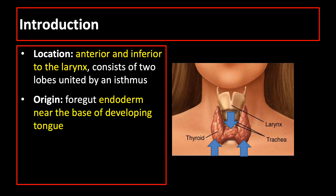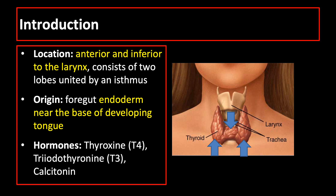It originates in early embryonic life from the foregut endoderm near the base of the developing tongue. The thyroid gland synthesizes the hormones thyroxine or tetraiodothyronine, triiodothyronine, and calcitonin.